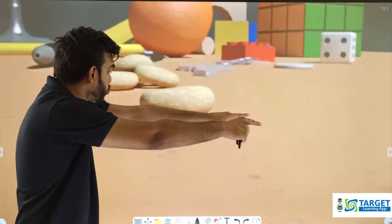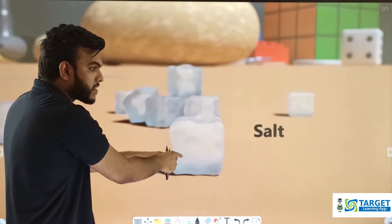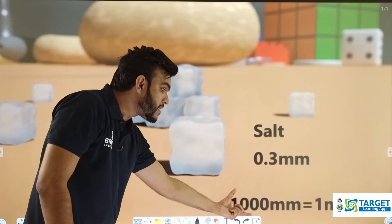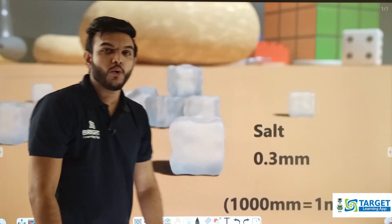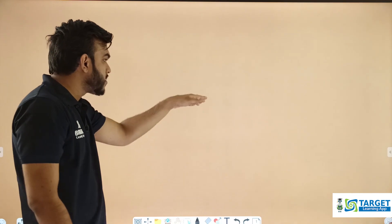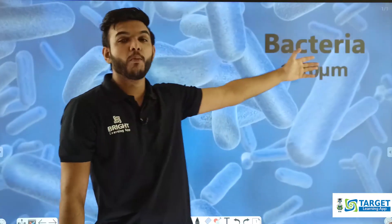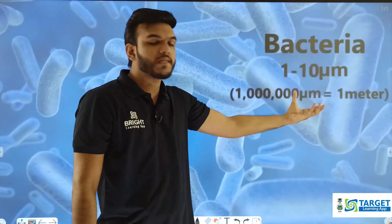When I go towards the salt crystals having a size of 0.3 millimeters, where 1000 millimeters equals one meter. Moving down towards bacteria, you can see bacteria having a micrometer structure that is very small in nature.